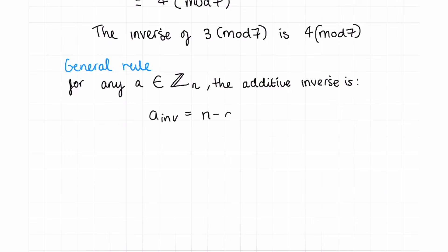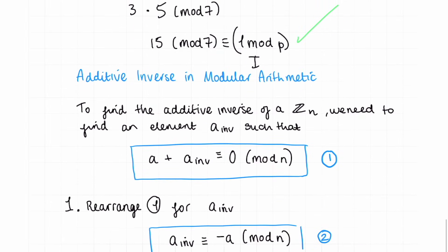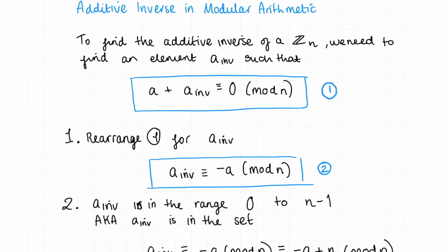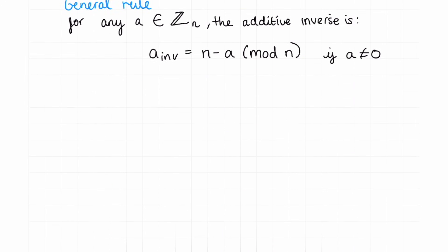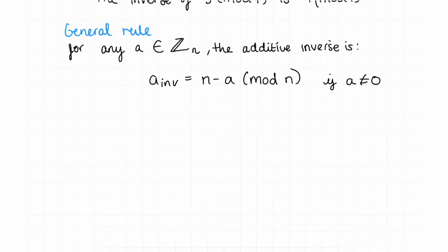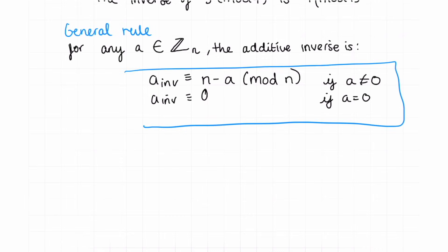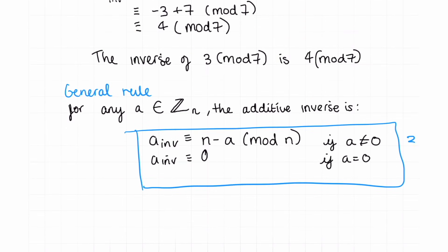A_inv is congruent to n minus a mod n, and this is true as long as a is not equal to zero. If a is equal to zero, going back to our initial equation, zero plus our inverse must equal zero, therefore a_inv must also be congruent to zero. So if a equals zero, then a_inv must also be congruent to zero. This is our golden equation — equation three — for finding the additive inverse.